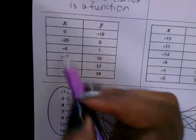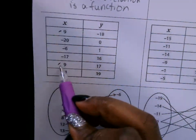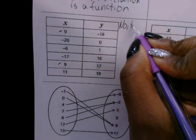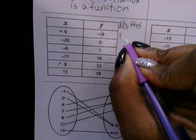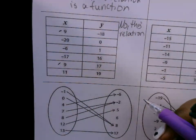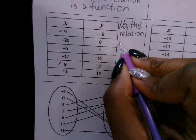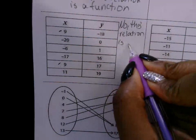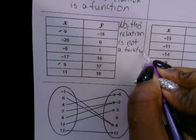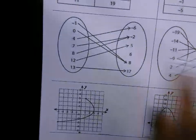Let's look at the x values here. This x value is the same as this one — see how these repeat? So this relation is not a function. No, this relation is not a function. All you're looking at is the x values, not the y's. The y's can repeat; they can all be the same. But the x values have to be different. This relation is not a function because the x values repeat.